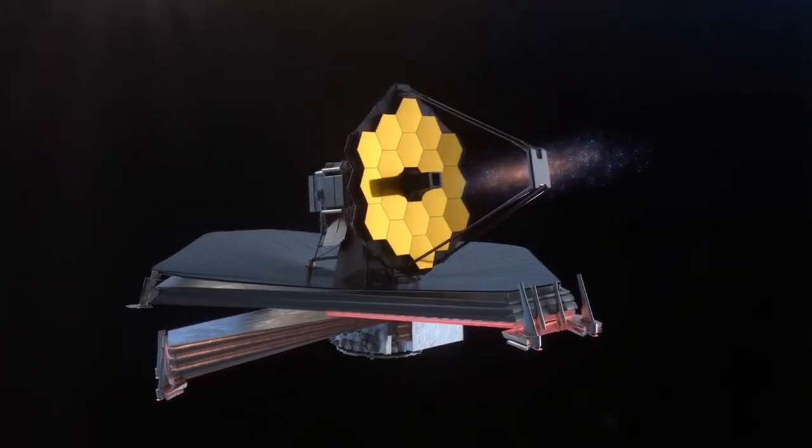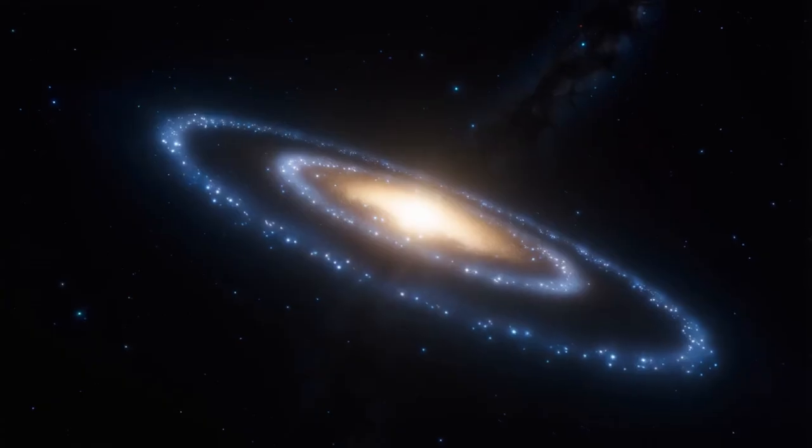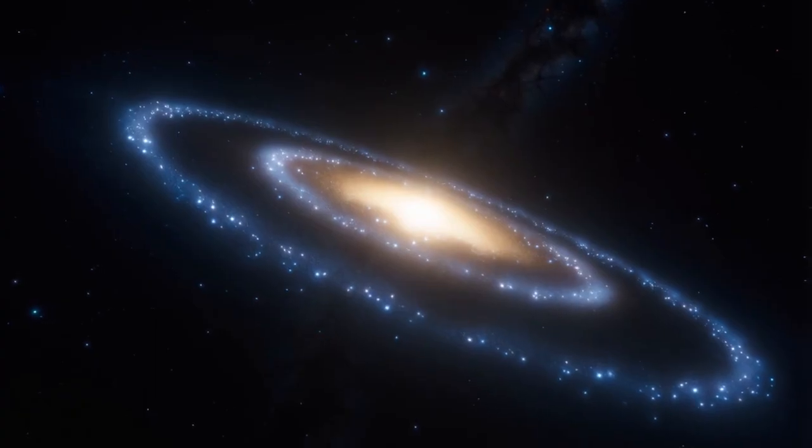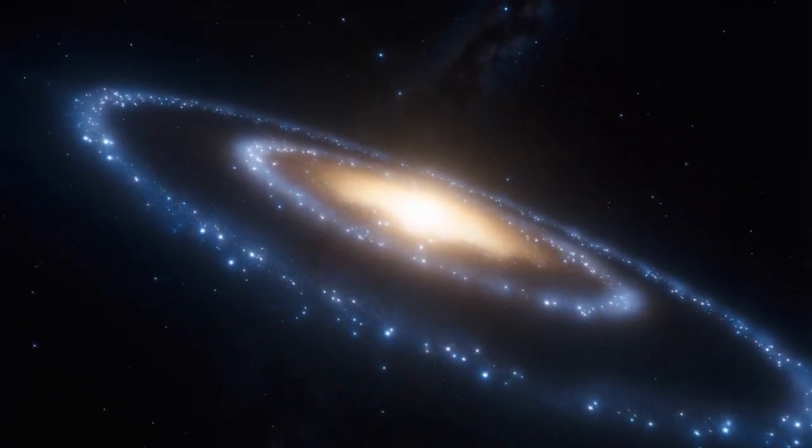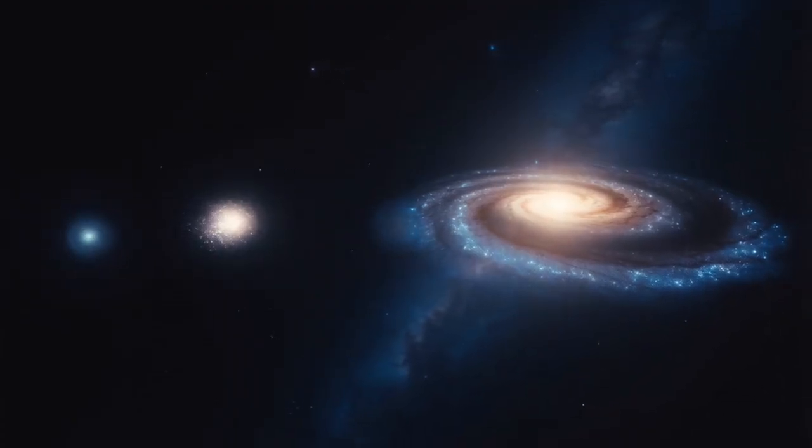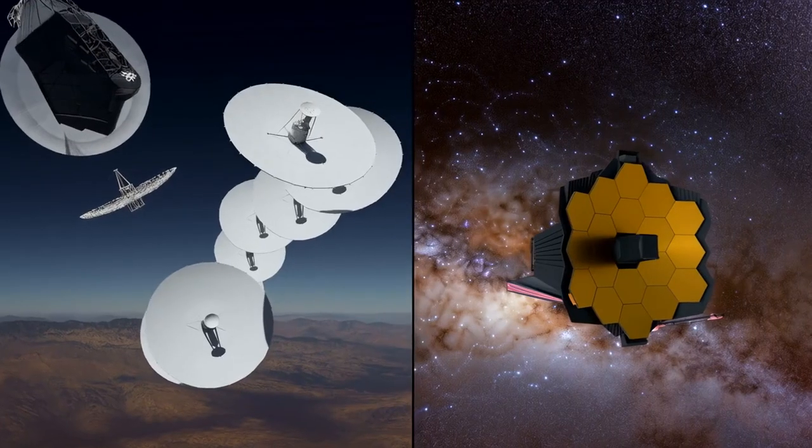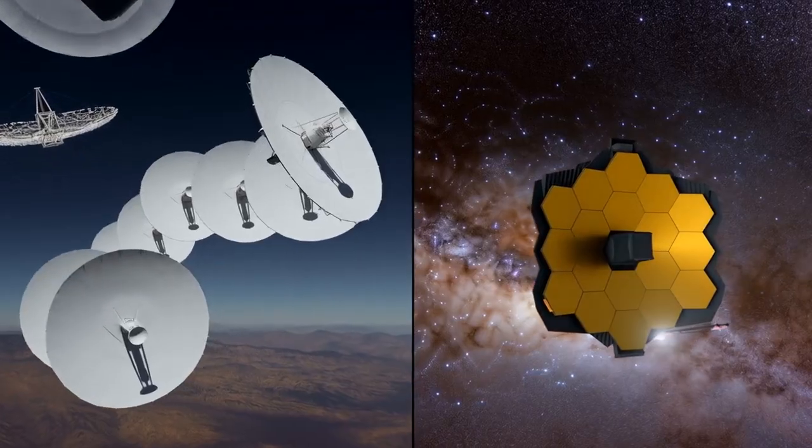Now, the James Webb Space Telescope has uncovered something even more alarming. Astronomers have discovered a colossal barred spiral galaxy named J0107A, dating back 11.1 billion years. This galaxy is just one-fifth the current age of the universe, which is shocking. Researchers used the Almay Observatory and the James Webb Space Telescope for this discovery.